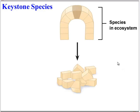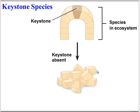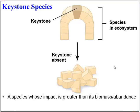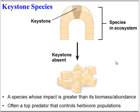Another important type is a keystone species. In this diagram, think of each block as a different species in an ecosystem — the keystone species sits at the center. It's not necessarily the most abundant species, but if we remove the keystone species, the whole community falls apart. So this is a species whose impact is really great even though its biomass or abundance is not. This is often a top predator that controls herbivore populations.